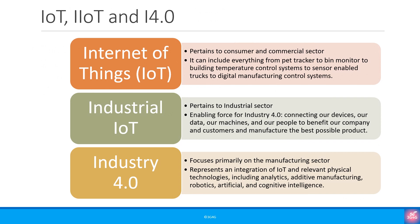We are often asked about the differences between IoT, IIoT, and Industry 4.0. Here is a short summary. IoT pertains to consumer and commercial sectors and can include everything from pet trackers to bin monitors to building temperature control systems to sensor-enabled trucks to digital manufacturing control systems. We have an excellent video looking at the difference between M2M, MTC and IoT — please do check it out.